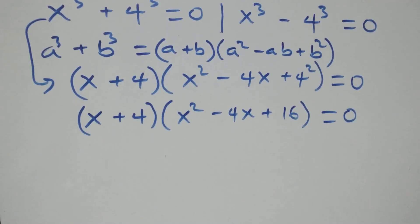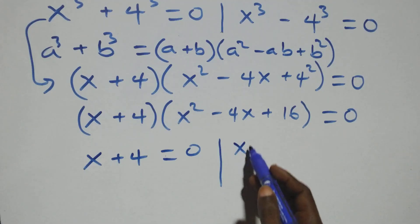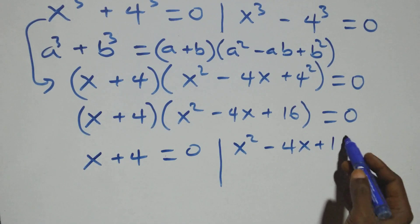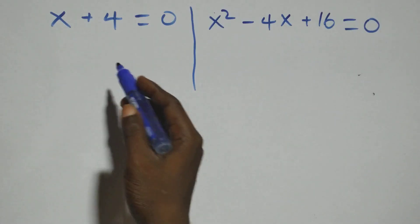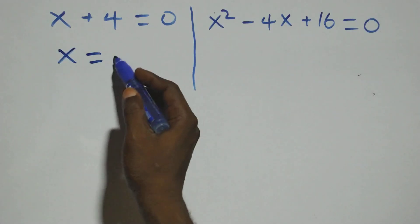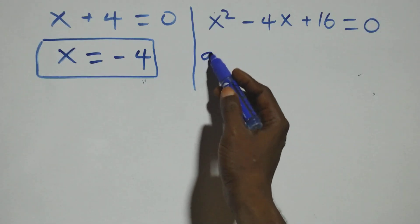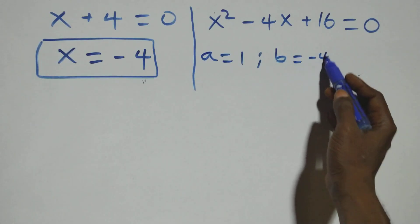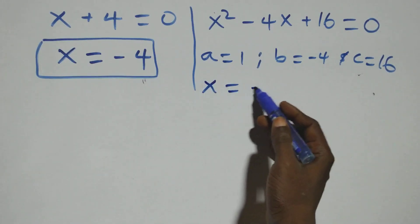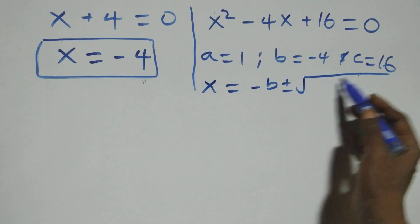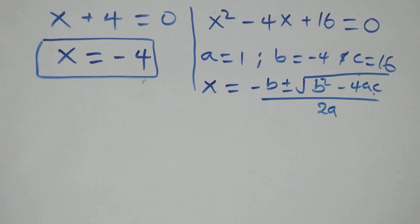We have two possible cases. The first one: x plus 4 equals to 0, giving x equals to minus 4, which is a real solution. Then we have a quadratic equation where a equals to 1, b equals to minus 4, and c equals to 16. Applying the quadratic formula x equals to minus b plus or minus square root of b squared minus 4ac, all over 2a.